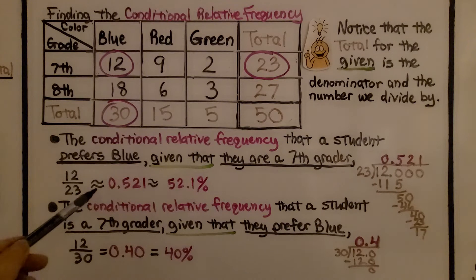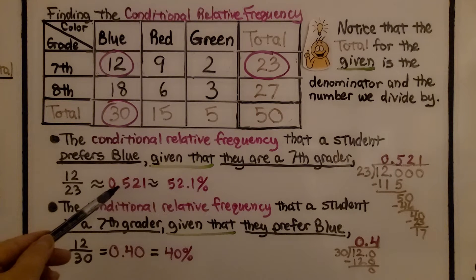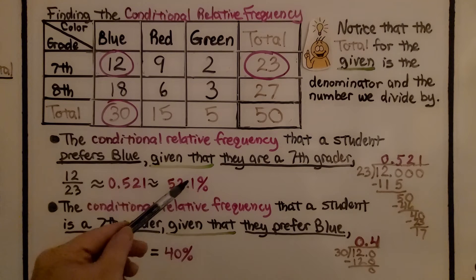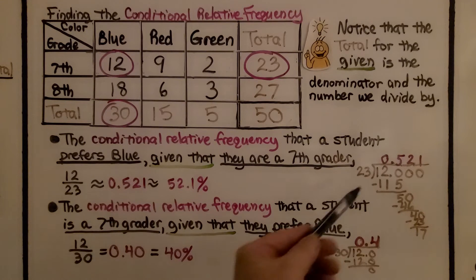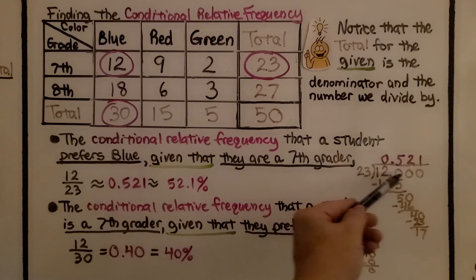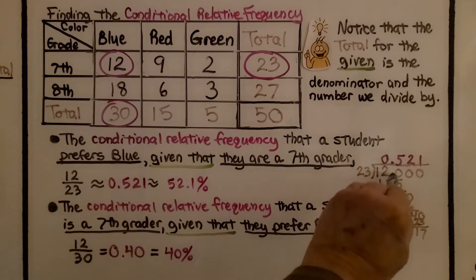We're going to divide the twelve by the twenty-three. We're going to get approximately five hundred twenty-one thousandths, which is about fifty-one and one-tenth percent. We divide twelve by the twenty-three and we just keep adding zeros.